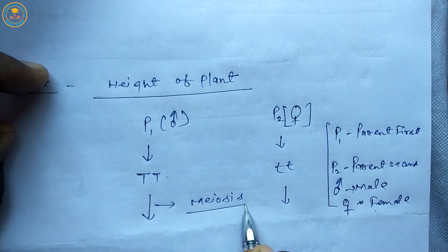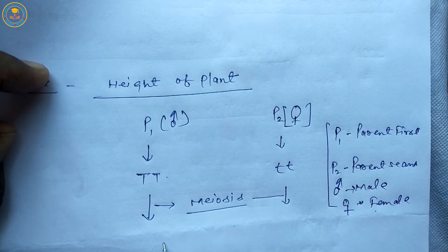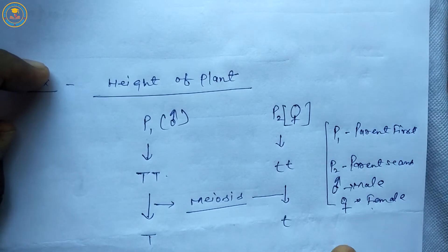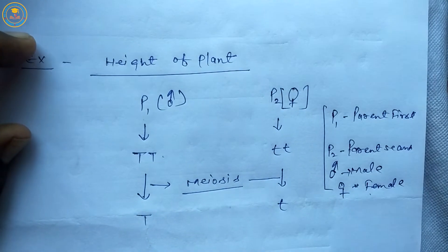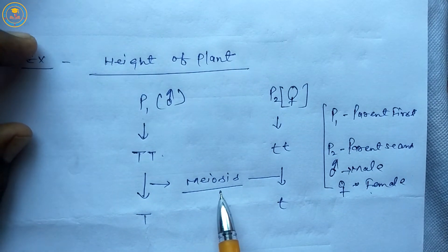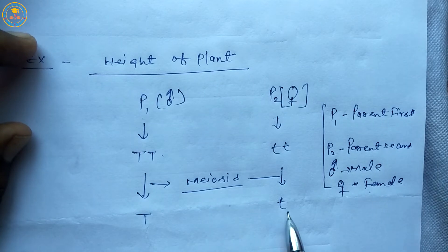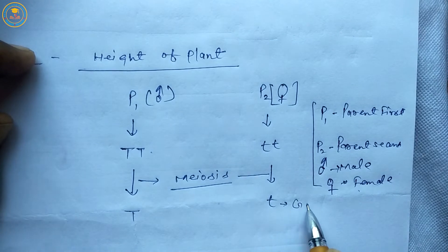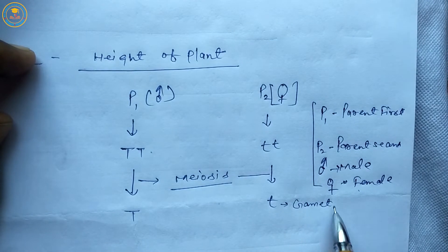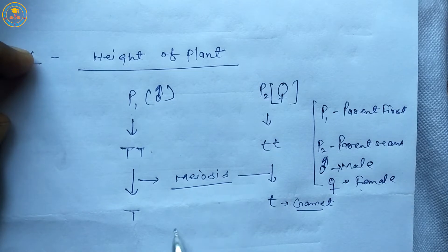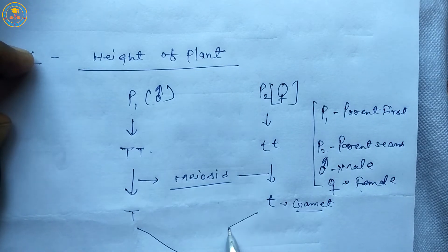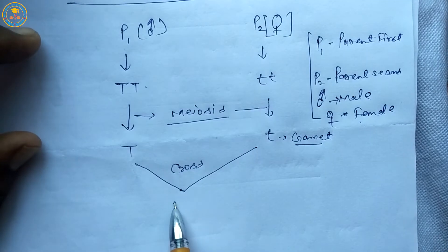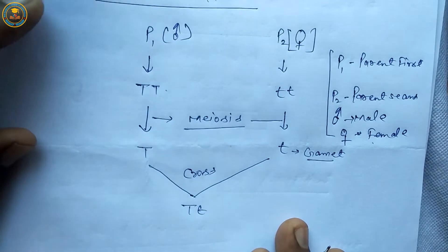Next process is meiosis. Students remember meiosis is also known as reduction division. By meiosis, gametes are formed. When gametes cross each other they form a specific generation.